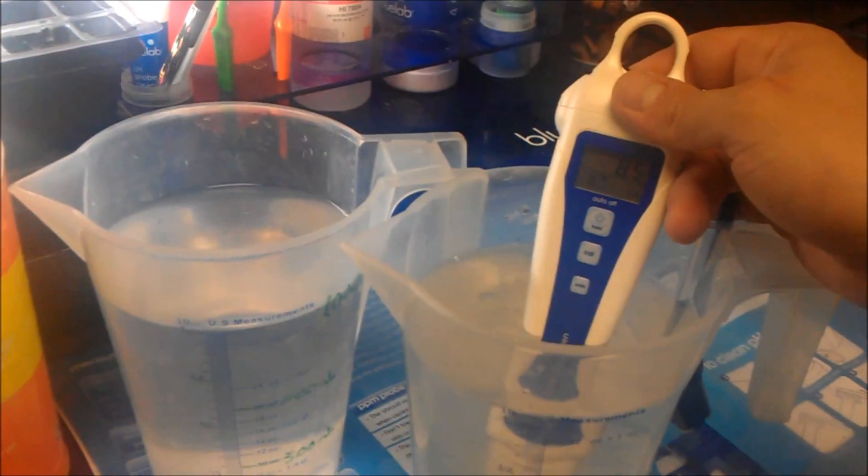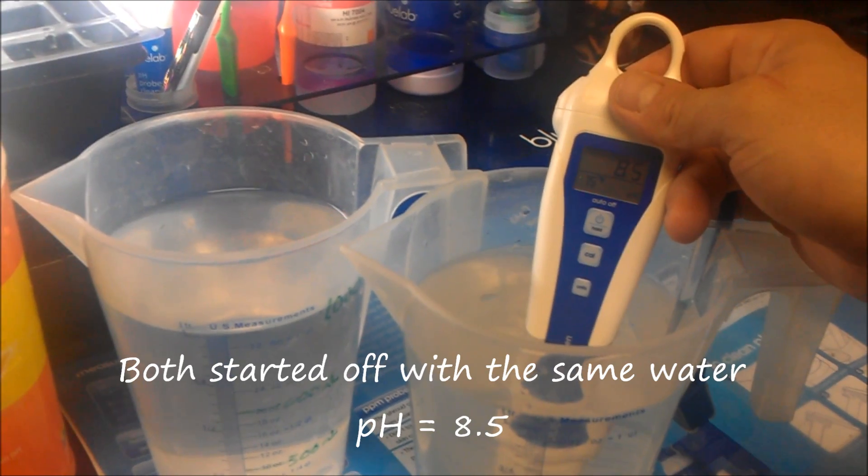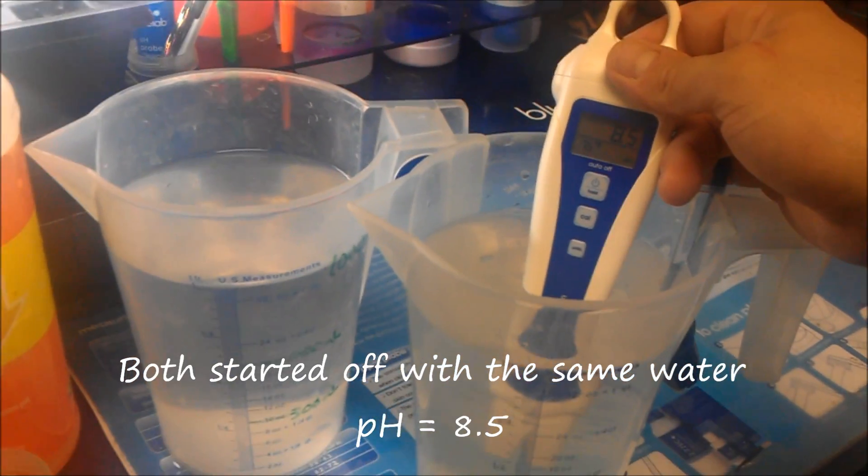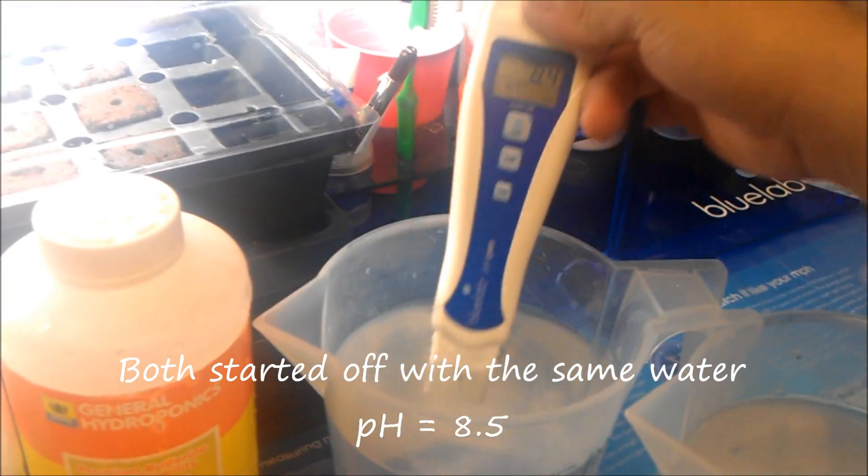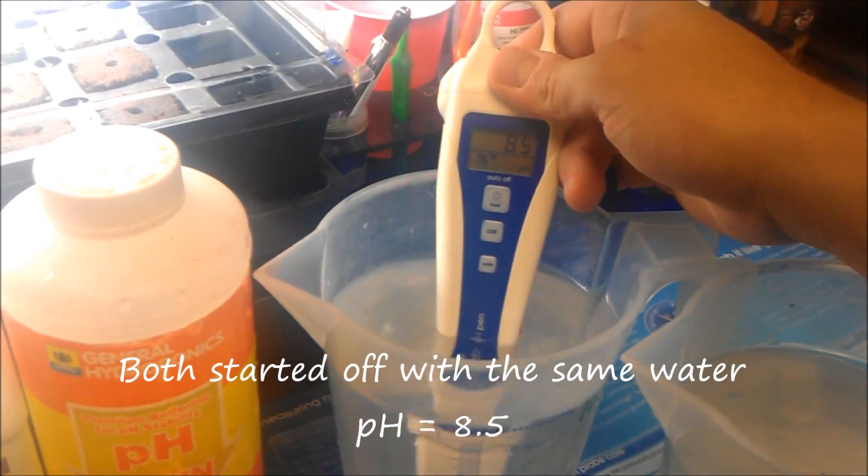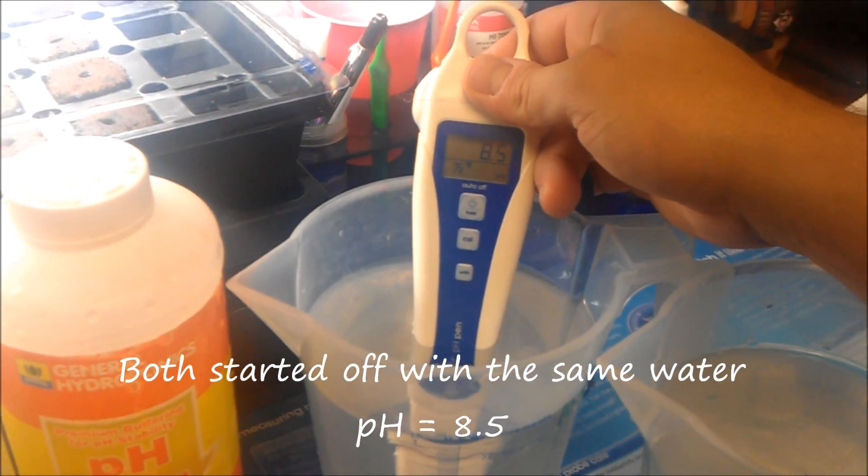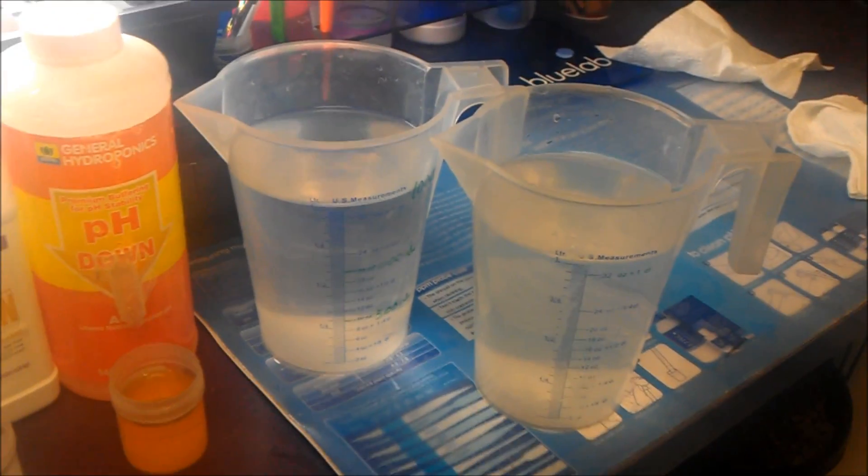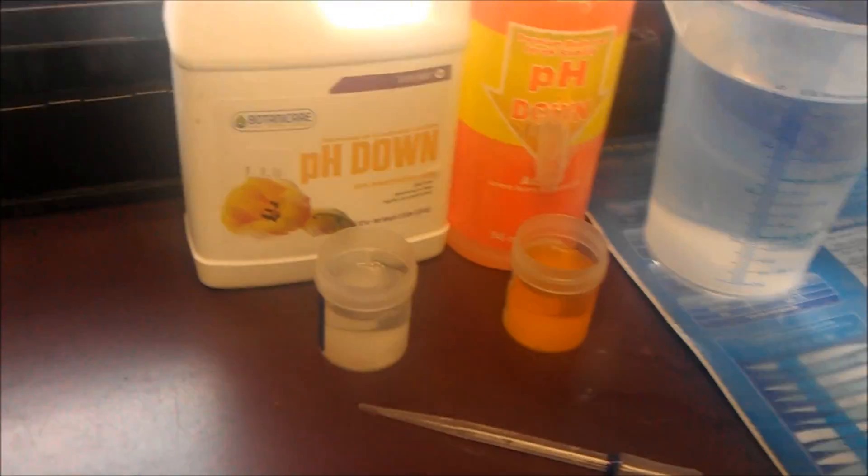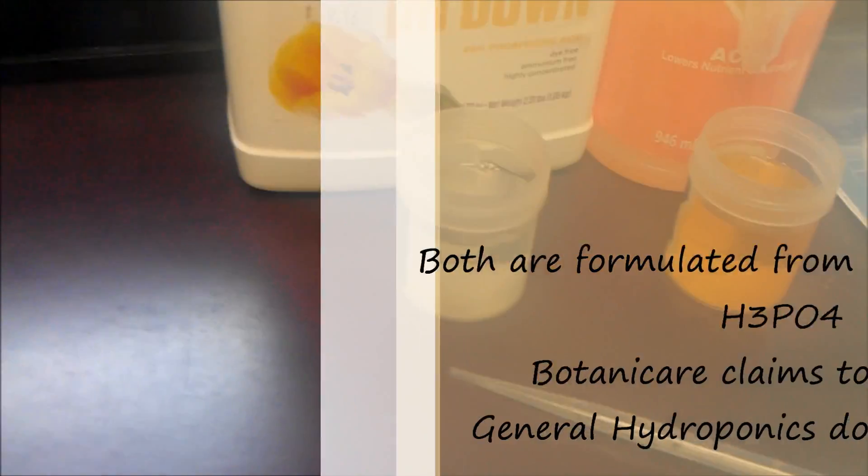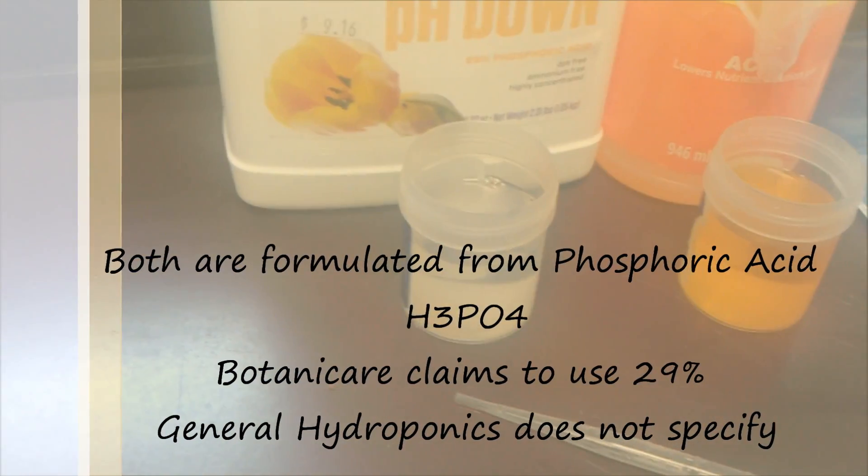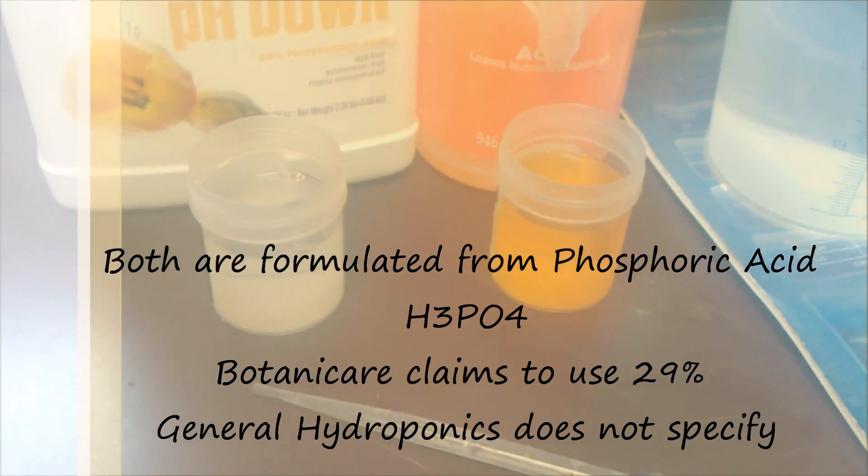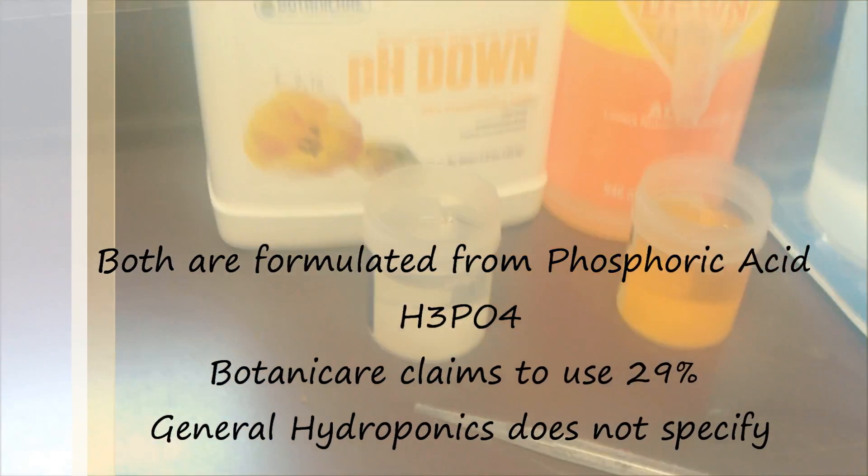Alright, so here's the base water: 8.5 pH. It's the same water, so 8.5 in this one as well. That's the pH without any addition. Now here's the Botanic Care pH down and General Hydroponics. Botanic Care is a clear solution.